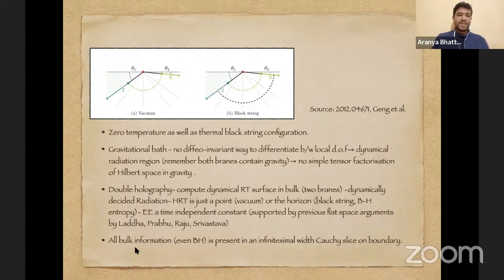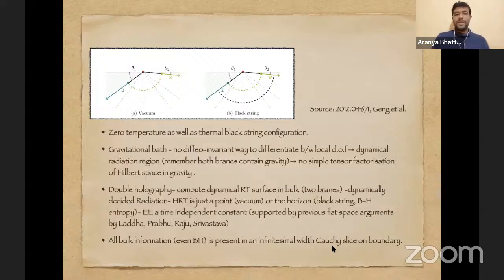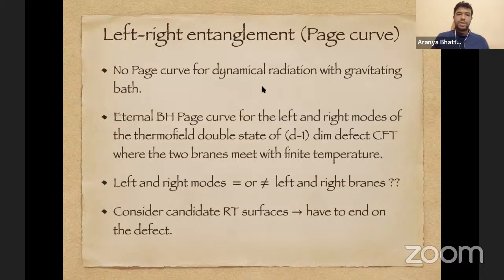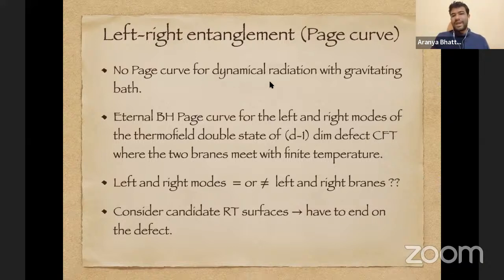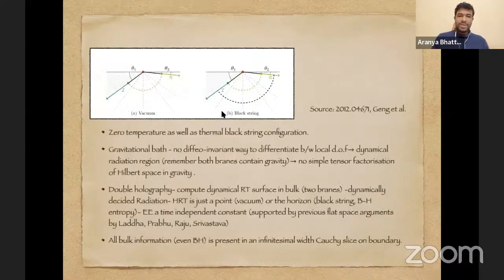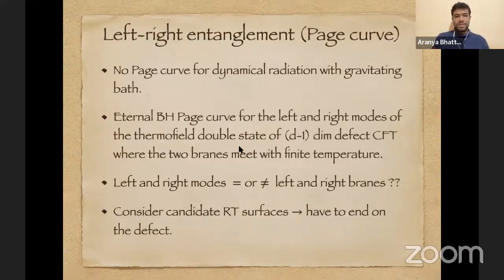For a weakly gravitating bath, the entanglement entropy is a time-independent constant, supported by previous flat-space arguments stating that all bulk information, even inside a black hole, is present in an infinite Cauchy slice on the boundary. However, the same paper also studied something called left-right entanglement, where they do reproduce a page curve of the eternal black hole type. So: no page curve for dynamical radiation with a gravitating bath, but an eternal-black-hole-type page curve appears for left and right modes of the thermofield double state.